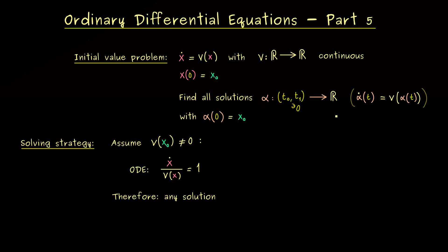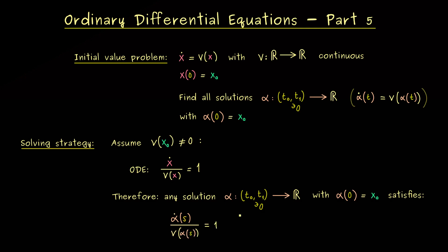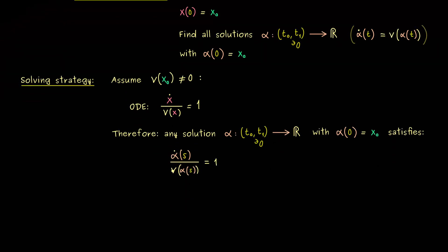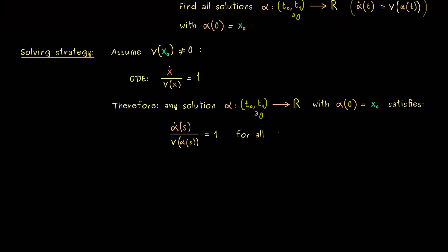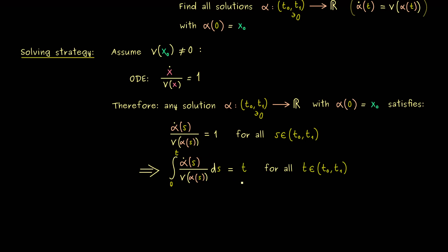Any solution alpha with 0 in the domain and alpha(0) = x₀ satisfies alpha-dot of s divided by v of alpha of s equals 1 for all s in the given interval. We use s for the independent variable here because we want t for something else. To solve this equation, we integrate both sides from 0 to t. On the right hand side we simply get t, and this equivalence holds by the fundamental theorem of calculus.